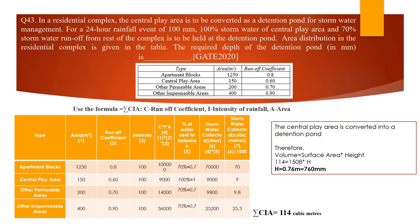The first question is from GATE 2020. In a residential complex, the central area is to be converted into a detention pond for stormwater management. For a 24-hour rainfall event of 100 mm, 100% of stormwater from the central area and 70% of stormwater runoff from the rest of the complex is to be held at the detention pond, which is the central play area. We need to find the depth of the detention pond. You simply use the stormwater formula: Q = Σ CIA — the sum of runoff coefficient times intensity of rainfall times area.